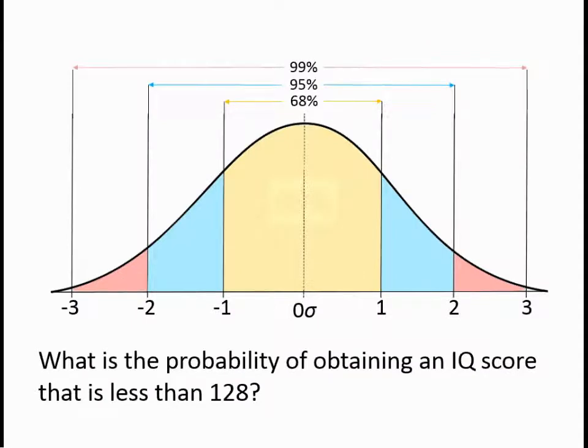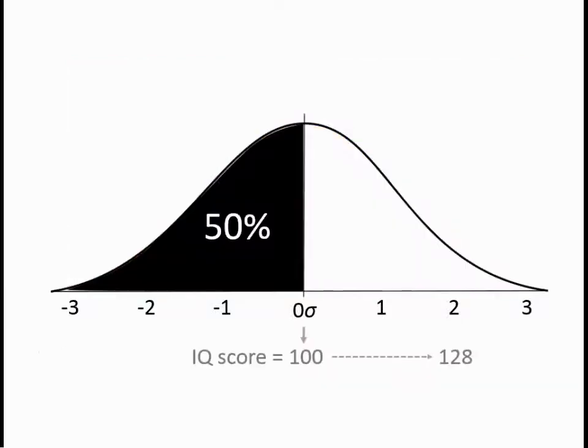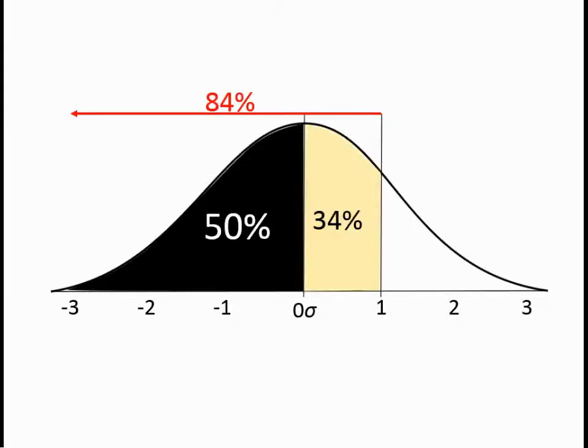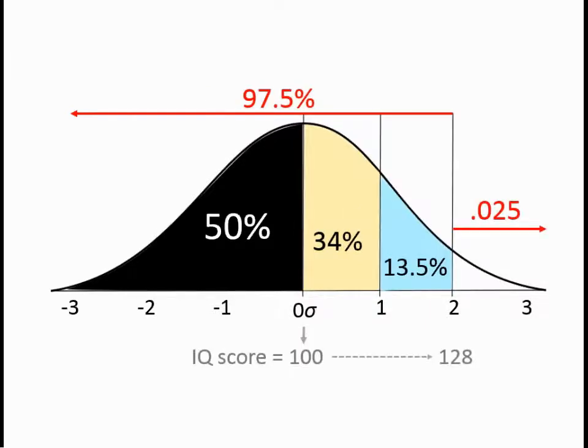What is the probability of obtaining an IQ score less than 128? Well, we know that half is 50%, one standard deviation more adds 34%, and one more adds 13.5%. So in this case, we know that approximately 97% of people are likely to have an IQ below 128. Inversely, this tells us that 2.5% have an IQ greater than 128, or that the probability of somebody having an intelligence score higher than you is 0.02.